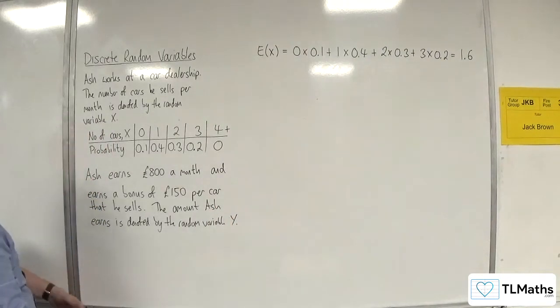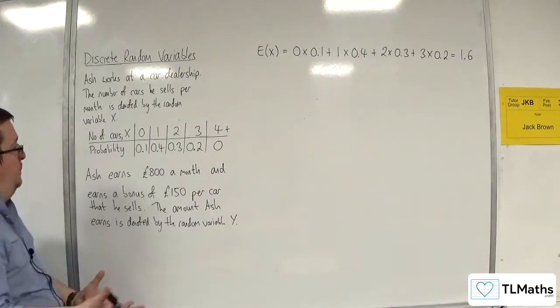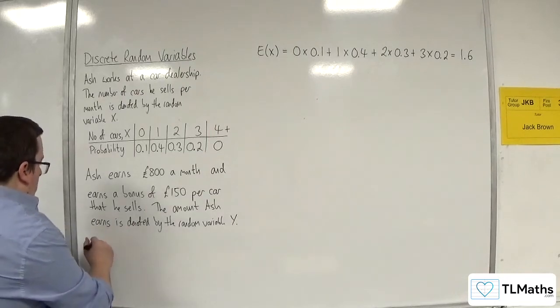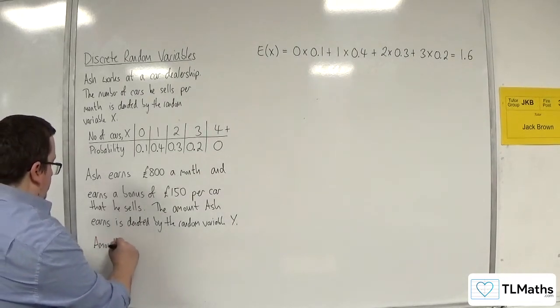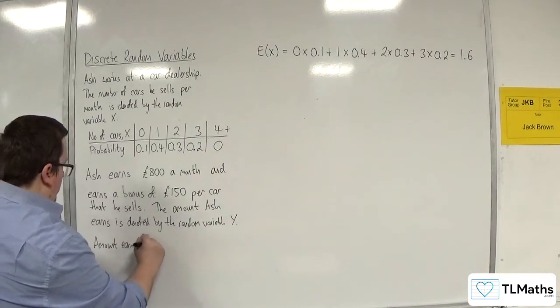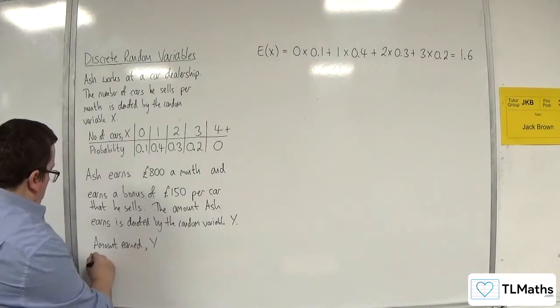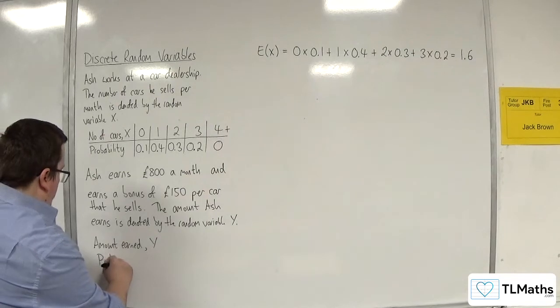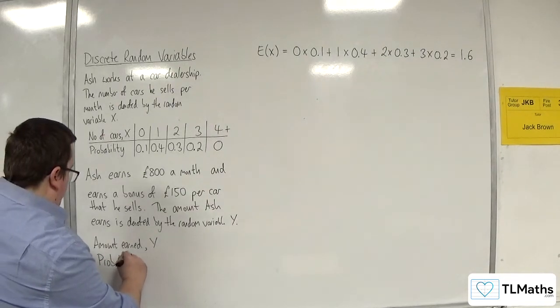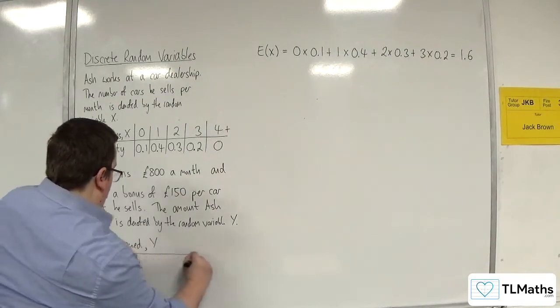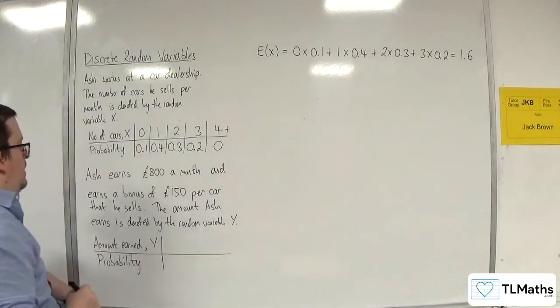OK. So, we're going to build up a new table. So, amount earned. Let's call that Y. And the respective probability.